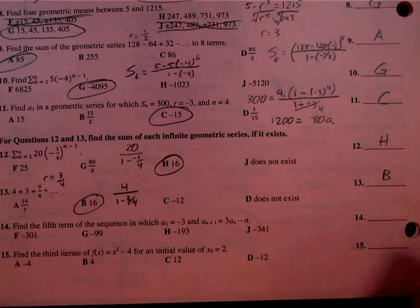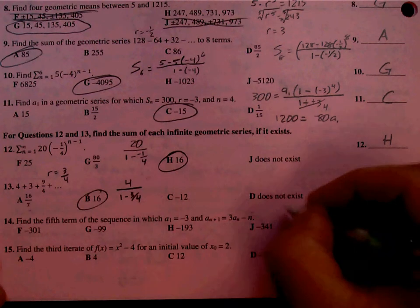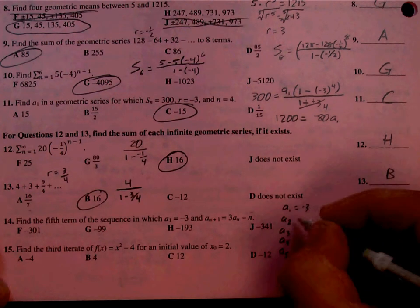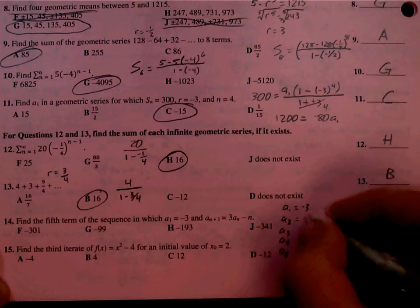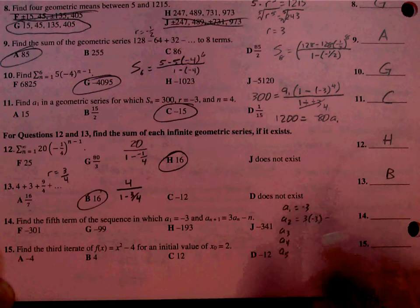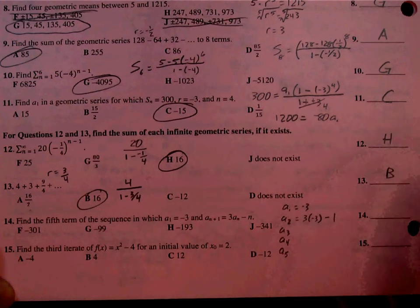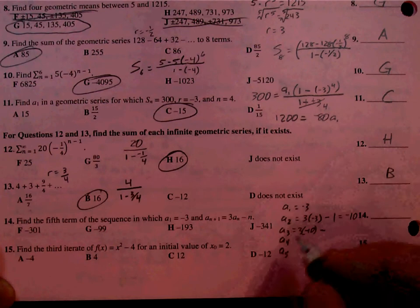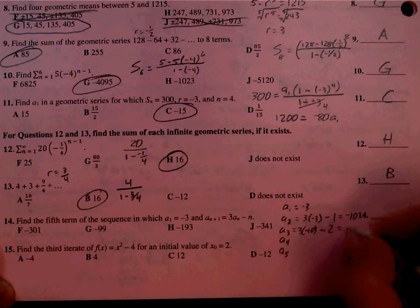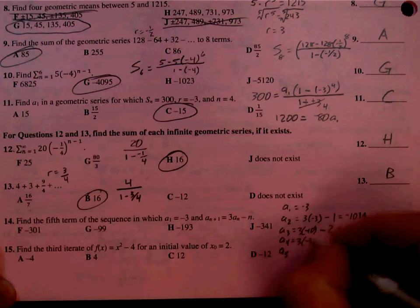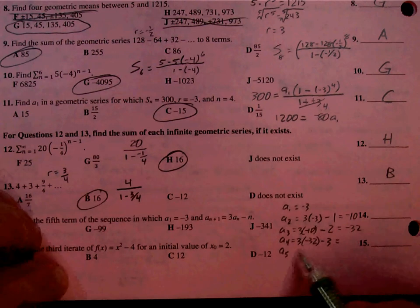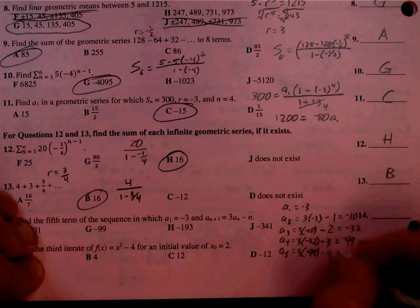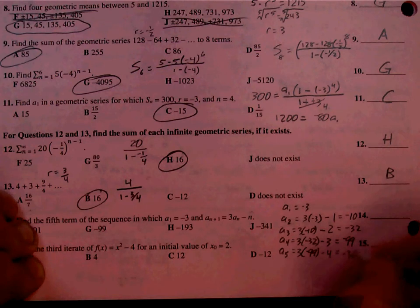Last two problems here. Number 14. Find the 5th term. So we're going to find each term as we go. We can't jump straight to the 5th term. So our first term we know is negative 3. And then we have to take 3 times the previous term, so it's negative 3 minus N, which is always 1 less than your subscript. So we have a subscript of 2, so we're going to subtract 1. So it's negative 9 minus 1 is negative 10. Then I take 3 times negative 10, this time I'm subtracting 2. So negative 32. Then I take 3 times negative 32 minus 3. So we get negative 99. So 3 times negative 99 minus 4 gives us negative 301. So negative 301 is our answer. That's F.